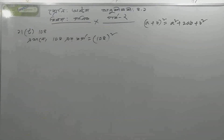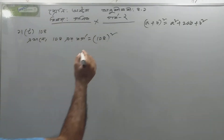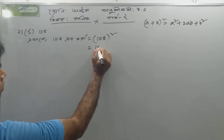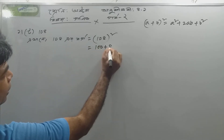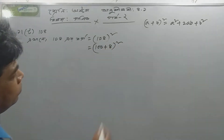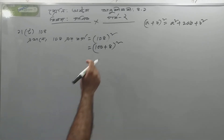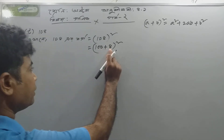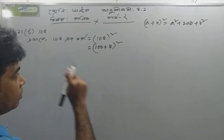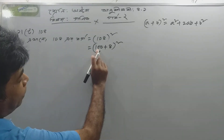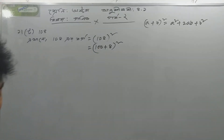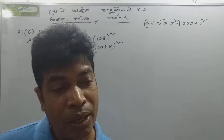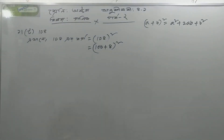But we learned the first step: we have a plus b, a whole square equals a² plus 2ab plus b². We know this step. In this step, we have to make x plus 8.